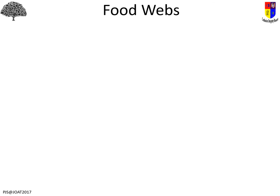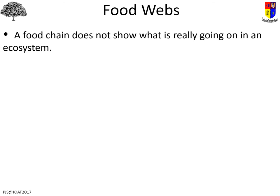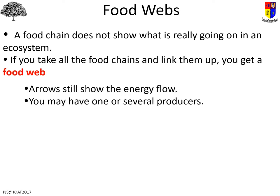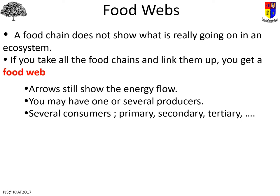A food chain is useful but doesn't show what's really going on, because organisms don't just feed on one thing — there's a whole pile of interactions in an ecosystem. A food web shows the connections between all the food chains; it's a set of linked-up food chains and still shows energy flow. You might have more than one producer and several different consumers that act as primary or secondary depending on which food chain you trace. We should also include decomposers — organisms that take energy from waste or dead material.